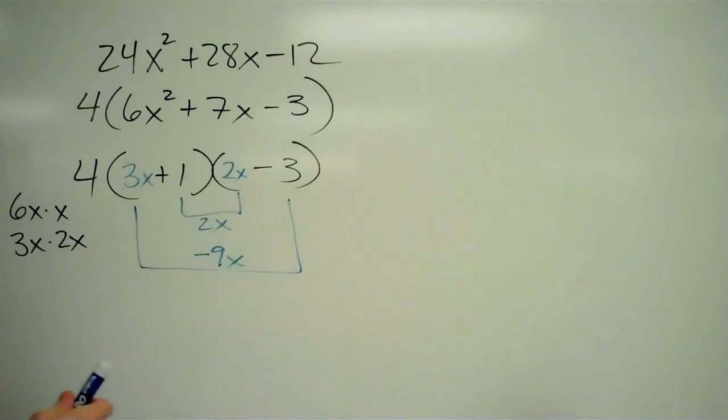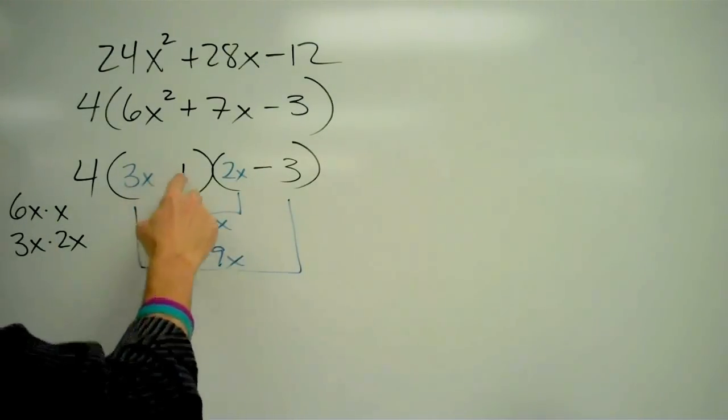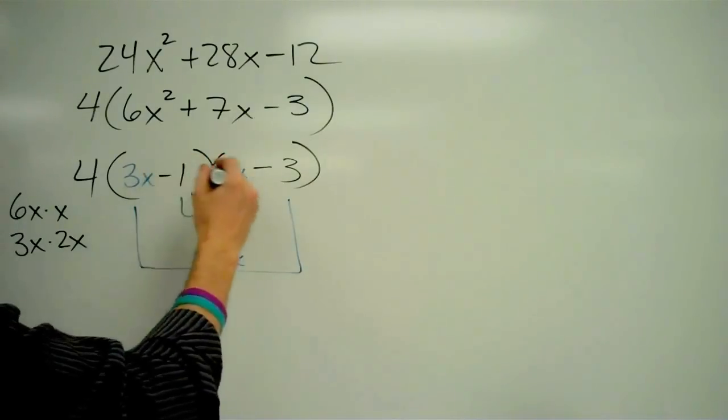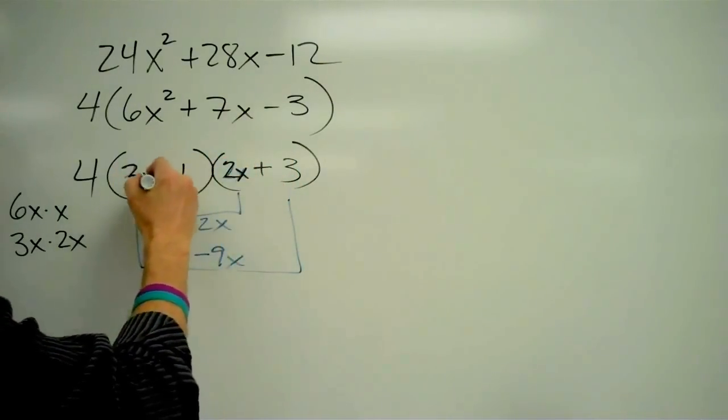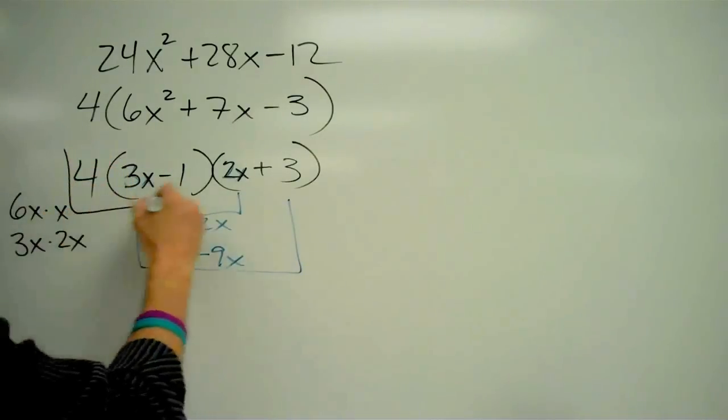I was aiming for positive 7x. And since I got the right number with the wrong sign, I just come back over here and change my signs. I'm going to make this negative and this positive. And there's my answer. Don't forget the 4 at the beginning.